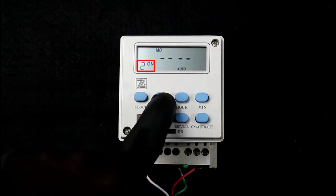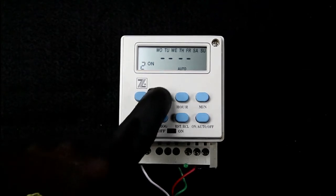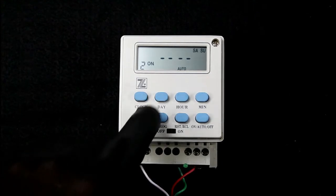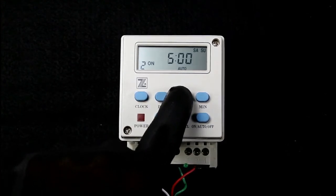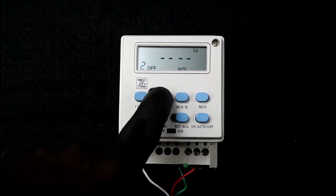This 2 here shows that I'm in the second program slot. I'm going to change the days to Saturday and Sunday. I just went past it. I'll cycle around again. And now the beginning time, 10 a.m., and the off time, 1400 hours, or 2 p.m.